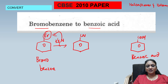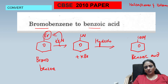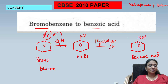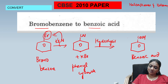Then, conversion of the cyano group to a carboxylic acid — there is only one procedure: hydrolysis. Hydrolyzing cyanobenzene gives benzoic acid. The name of the intermediate compound is phenyl cyanide. That's Method 1. Now let's see one more method.